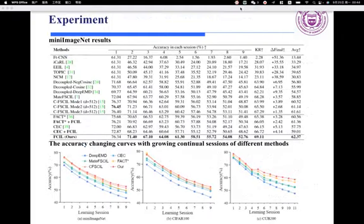Finally, we present some experimental results. Firstly, we show the experimental results on MiniImageNet within the FCIL framework and other methods. We also display the accuracy curves with the growing continuous sessions of different methods.